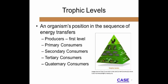Herbivores are primary consumers because they consume plant material. Carnivores are secondary, tertiary, and quaternary consumers. The numeric designations refer to how many links in the food chain the consumer is away from the producers.